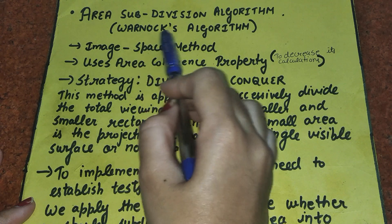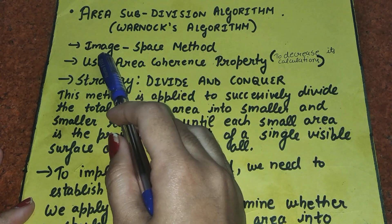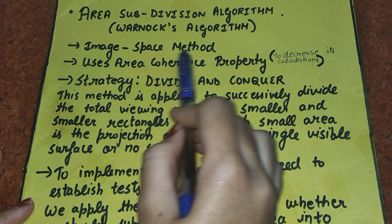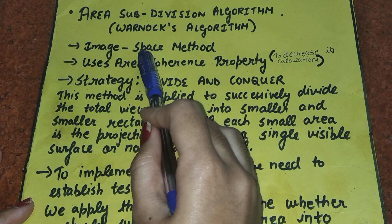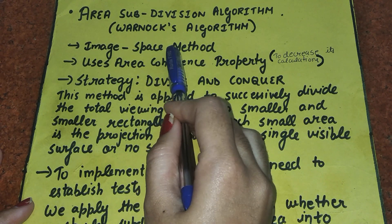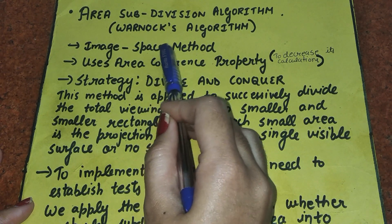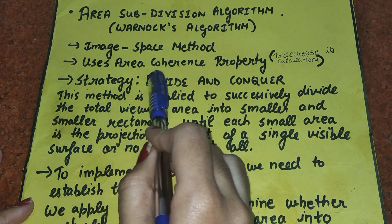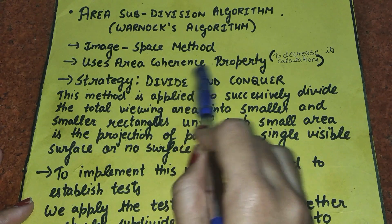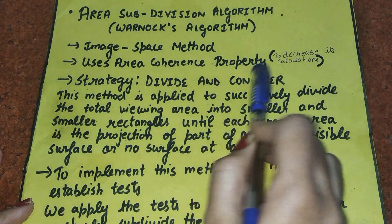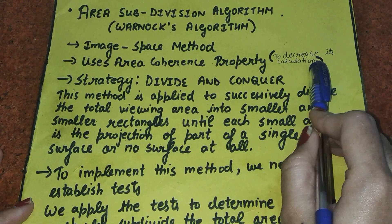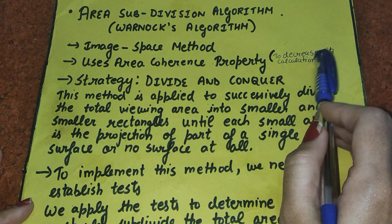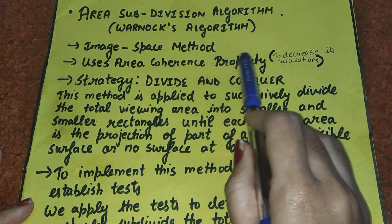The area subdivision method uses the image space method. Image space method is a method in which visible surface detection is done by comparing the pixels of the projected image. It also uses the area coherence property. The area coherence property is used to decrease calculations — the calculations performed in the area subdivision algorithm can be reduced using this property.